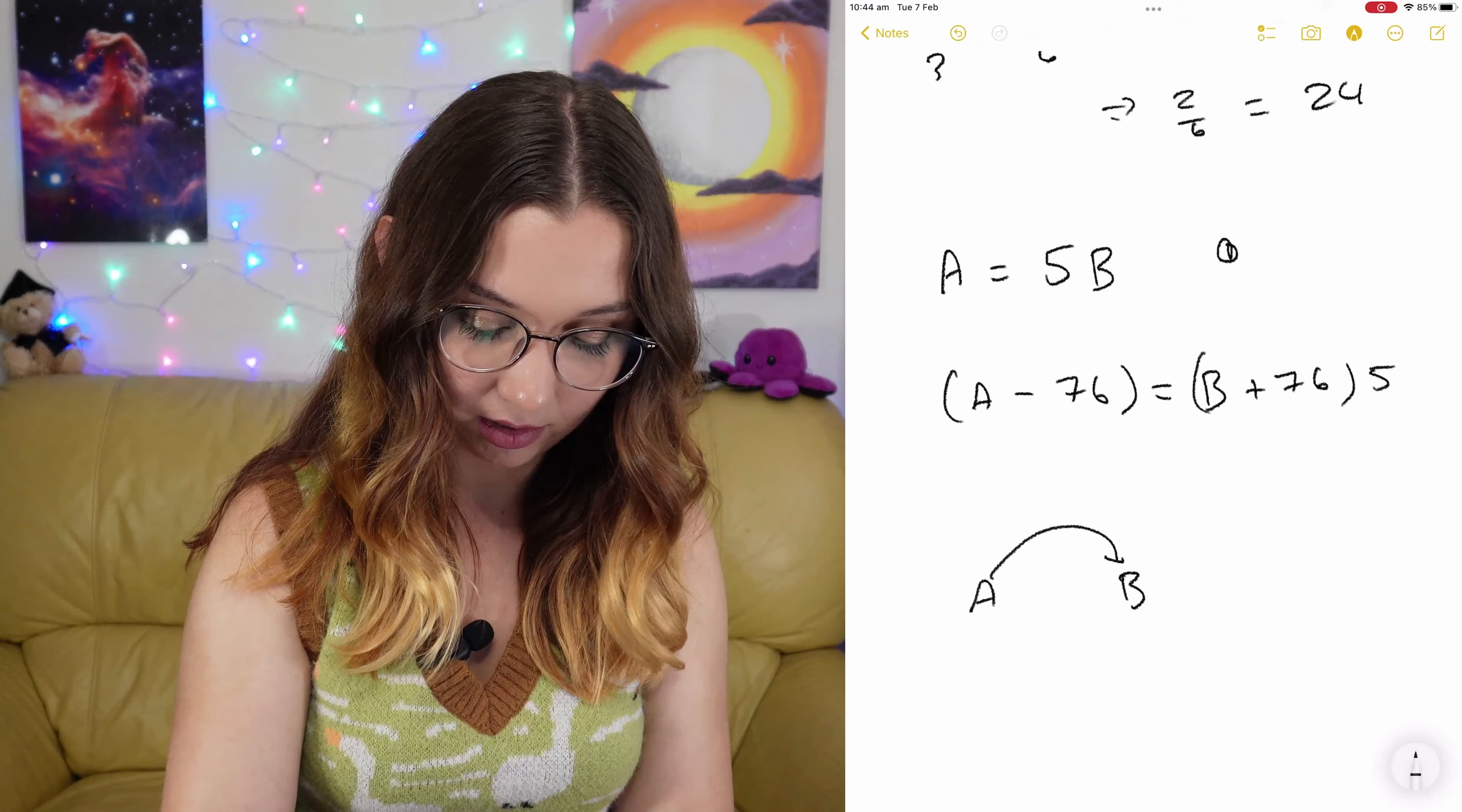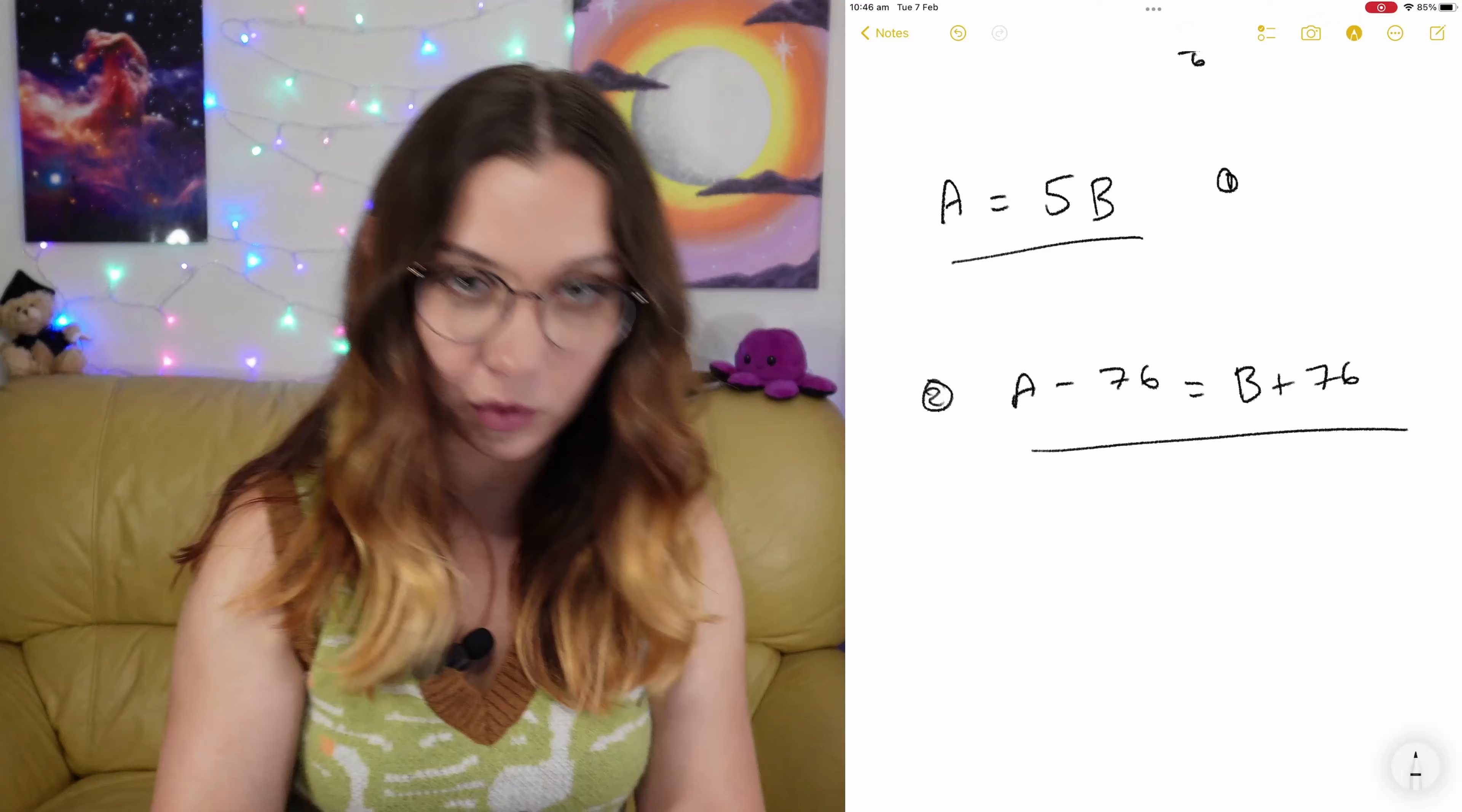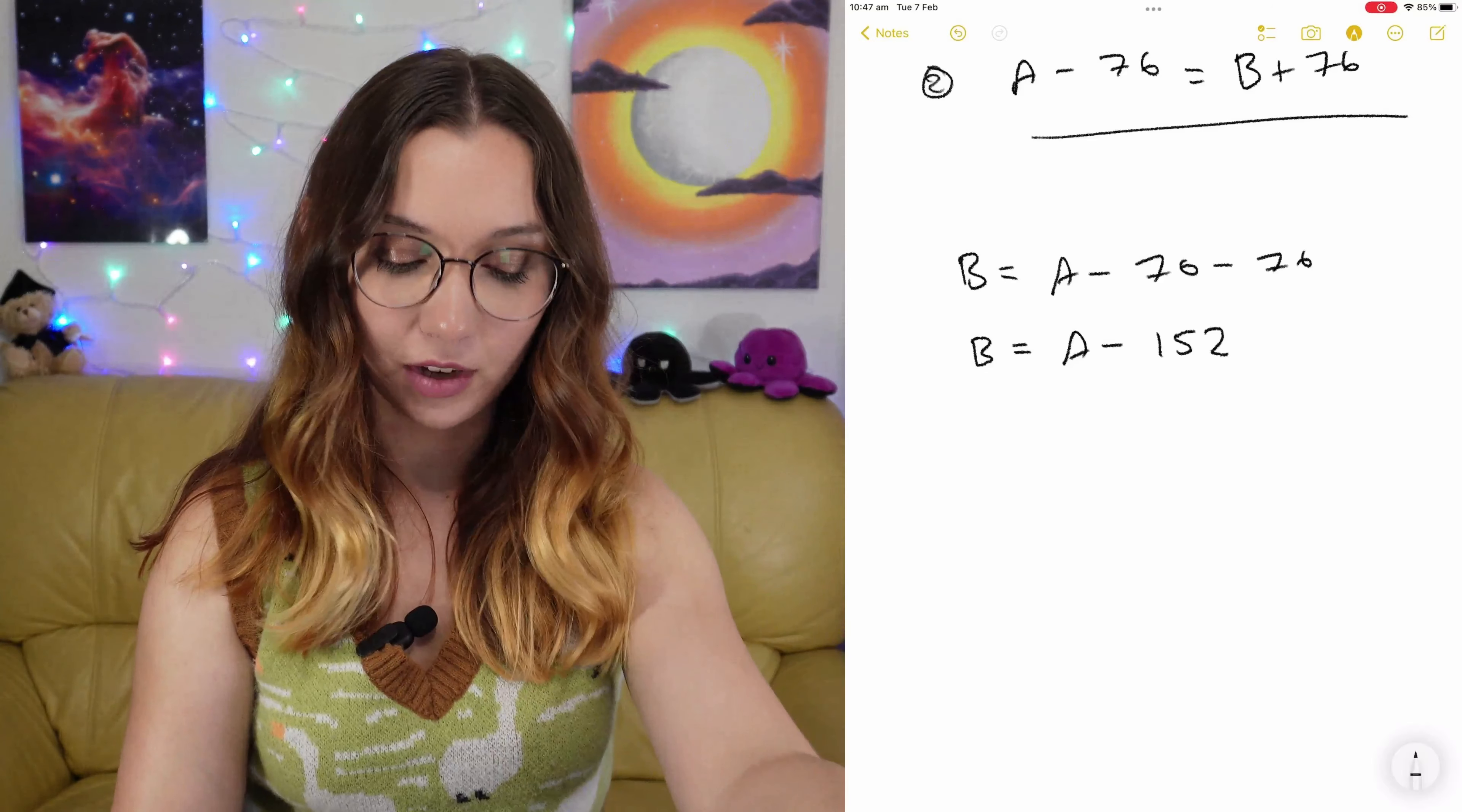The original number in A minus 76 is equal to B plus 76. I think I got this. Equation one, equation two. Simultaneous equations. We want to work out what A is. So B is equal to A minus 76 times 2. That's 152. Now we're going to put that value for B into the first equation.